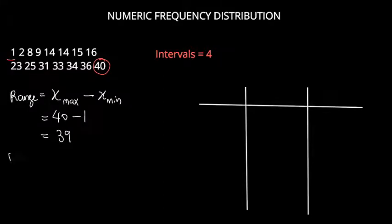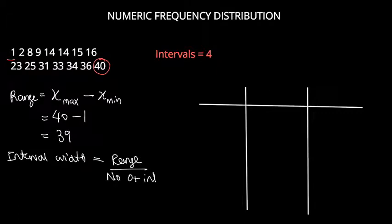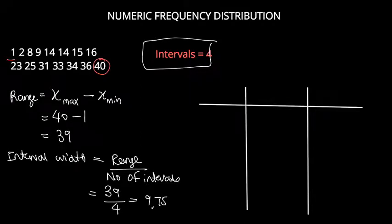Once we have our range we can calculate the interval width, which is the range divided by the number of intervals. So we've been given the number of intervals as 4, so that'll be 39 divided by 4. That gives us 9.75, and to make sure all our data values are included into our intervals, we need to round up this figure to 10.